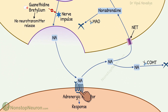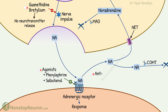Next, we have receptors themselves. Here we have a wide range of drugs acting directly on the receptors. Agonists, like phenylephrine and salbutamol, stimulate the receptors. And antagonists, like phentolamine and propranolol, inhibit the receptors. These are the most important and commonly used classes of drugs.